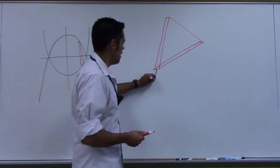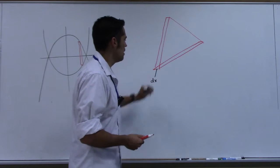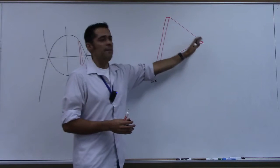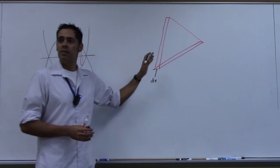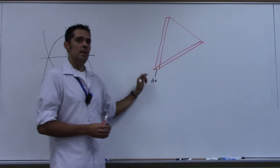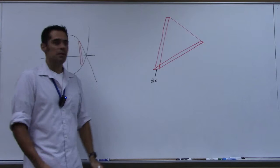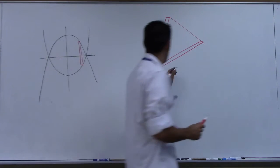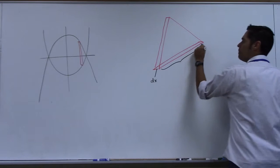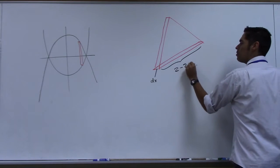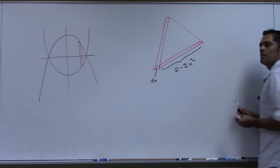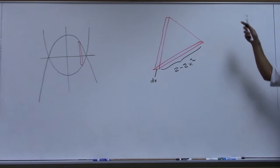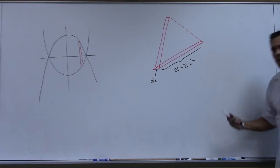We know this is dx. What we need now is the area — the area of the face of this. Whatever the area of the face is times dx is the volume. So what's the area of that triangle? I heard Zach say that this right here we know is 2 minus 2x squared. We've got that. All of them are the same, aren't they? But what's the area?